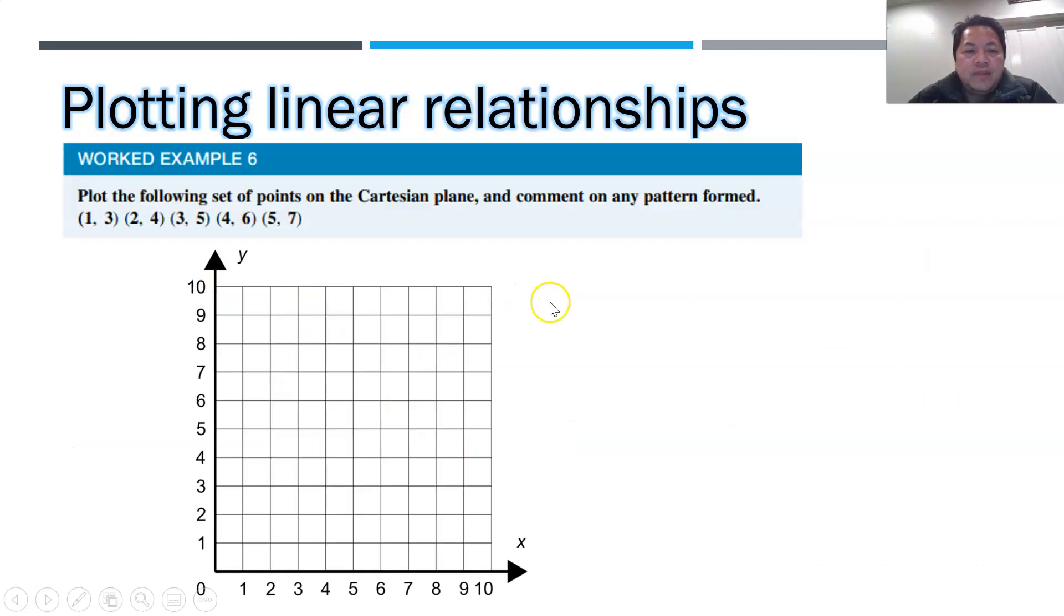Moving on, why don't you try on your own to determine where are the points? You may want to pause the video to see point by point whether you're correct. First one is 1, 3. Next one is 2, 4, next one is 3, 5, next one is 4, 6, next one is 5, 7. When you look at it, you can actually form a straight line, isn't it? So therefore, the relationship between x and y is linear.